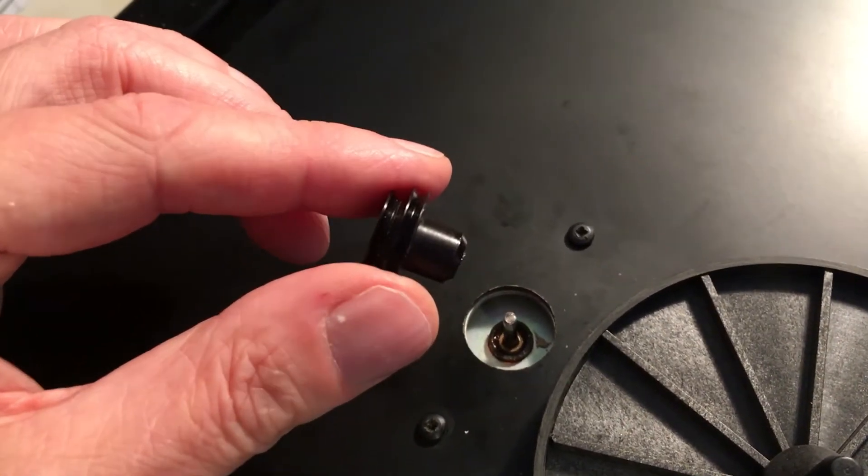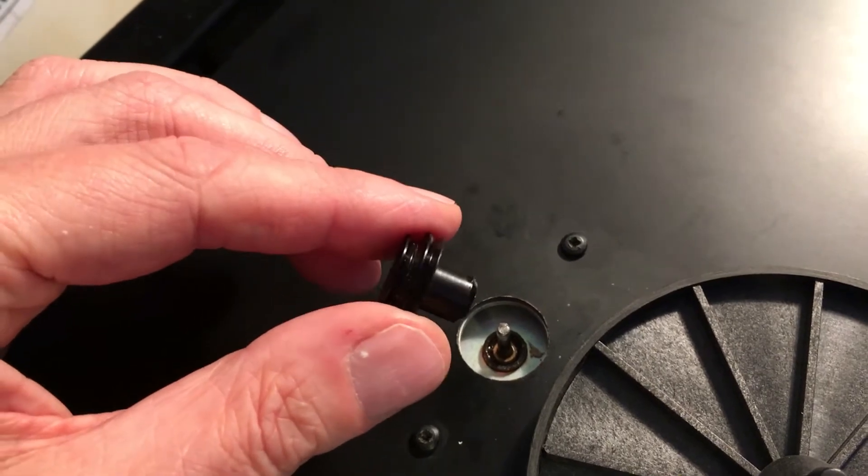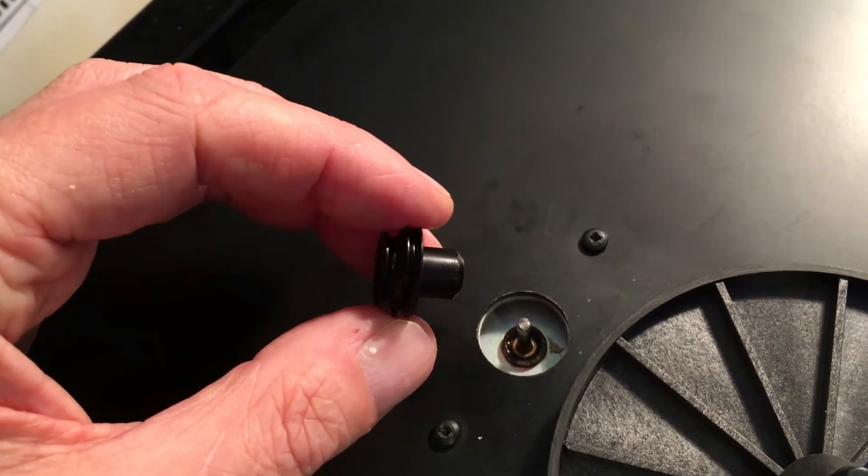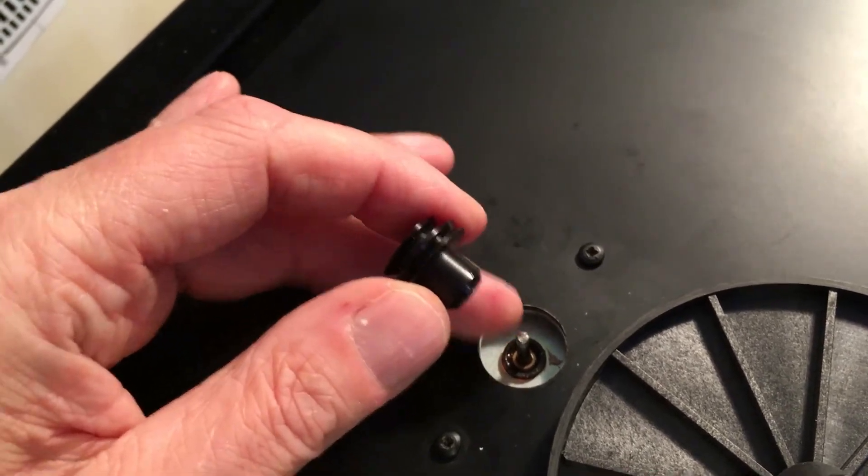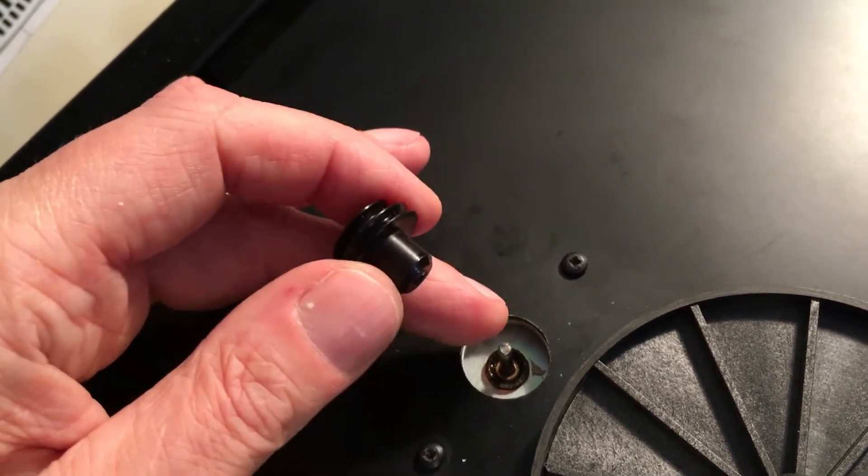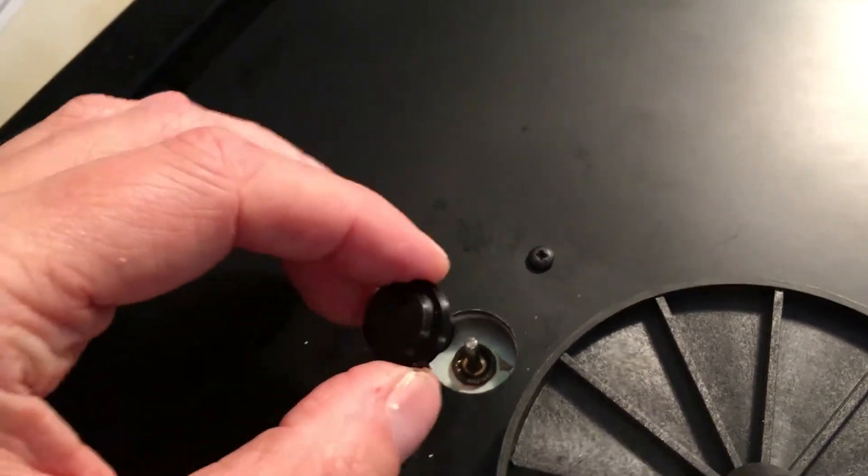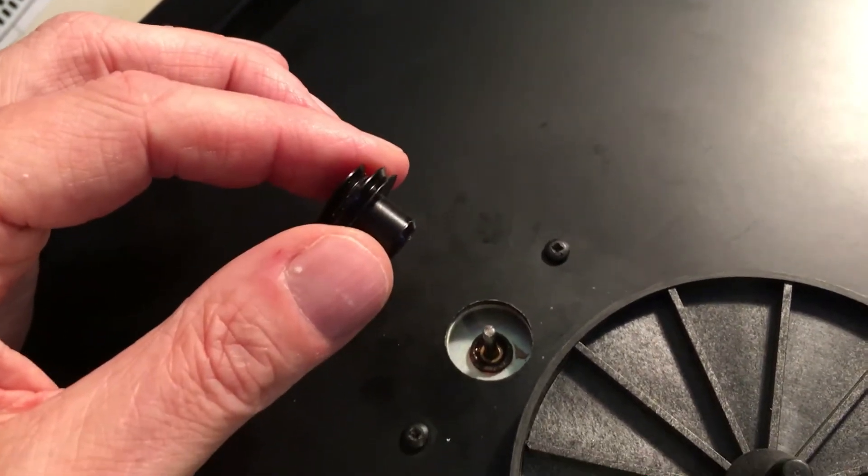The fix for that is just to glue it back on, there's a couple of ways of doing it. I generally would say don't use super glue. I would just put a tiny amount of a slow set glue on there, I've even used actually PVA which is wood glue, just a tiny little smear of wood glue on there and press it back on all the way down, leave it overnight.